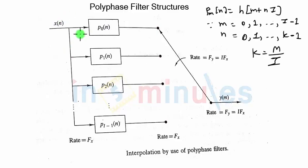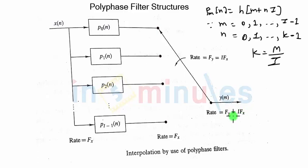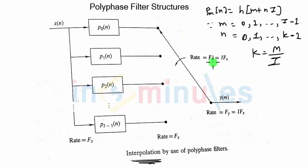Please note that we are not carrying out upsampling right now. We are immediately giving x of n to the polyphase filters. So the rate of the signal at the input of the polyphase filters is fx. But the output signal y must be available at the rate fy. fy has to be I times fx because ultimately we are doing the process of interpolation. To do that, we will have the upsampling process in the form of a switch on the output side. This switch will keep on rotating at the rate of fy, which is I times fx.